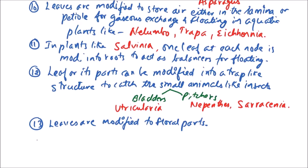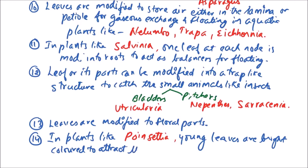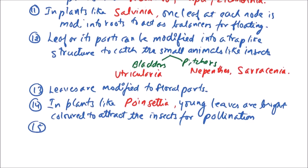Next function: leaves are modified to floral parts. We have already discussed that floral parts are basically modifications of leaves. In plants like Poinsettia, young leaves are brightly colored to attract insects for pollination.